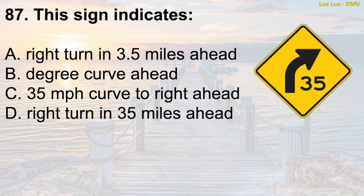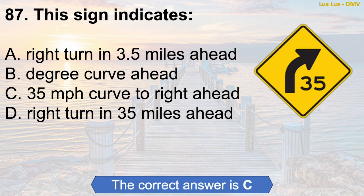Question 87: This sign indicates — A. Right turn in 3.5 miles ahead. B. Degree curve ahead. C. 35 miles per hour curve to the right ahead. D. Right turn in 35 miles ahead. The correct answer is C: 35 miles per hour curve to the right ahead.